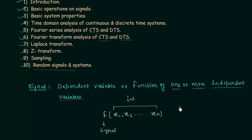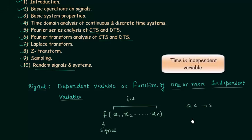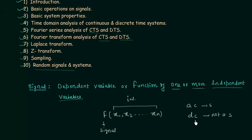Any quantity is said to be a signal if it is varying with an independent variable, and anything which is constant is not a signal. For example, alternating current is a signal because the current is changing with time. Direct current is not a signal because the current is constant — it is not changing with time, so we are not getting any kind of indication.